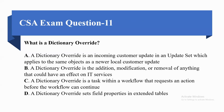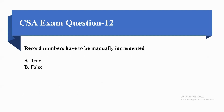Question: What is a dictionary override? Option A: a dictionary override is an incoming customer update in an update set which applies to the same object as a newer local customer update. Option B: the addition, modification or removal of anything that could have an effect on IT services. Option C: a task within the workflow that requests an action before the workflow can continue. Option D: dictionary override sets field properties in extended tables. The correct option is D.